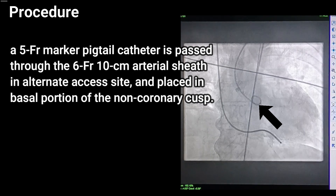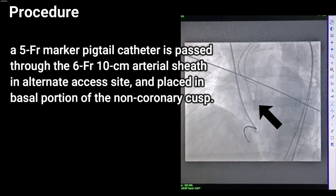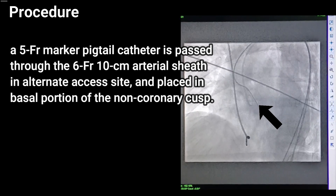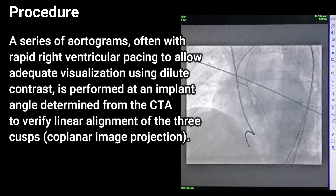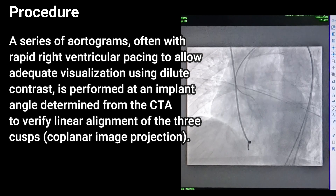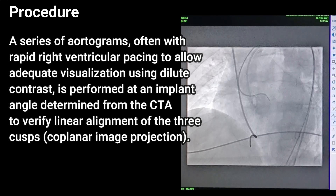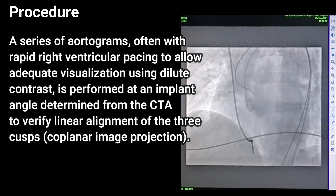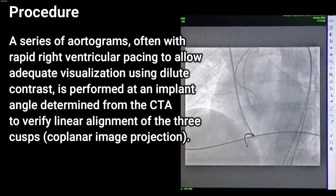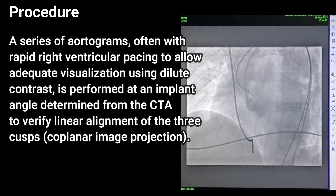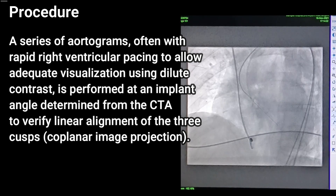A 5-French marker pigtail catheter is passed through the 6-French 10-centimeter arterial sheath at the alternate access site and placed in the basal portion of the non-coronary cusp. A series of aortograms, often with rapid right ventricular pacing, is performed using dilute contrast at an implant angle determined from the CTA, to verify linear alignment of the three cusps in the coplanar image projection.